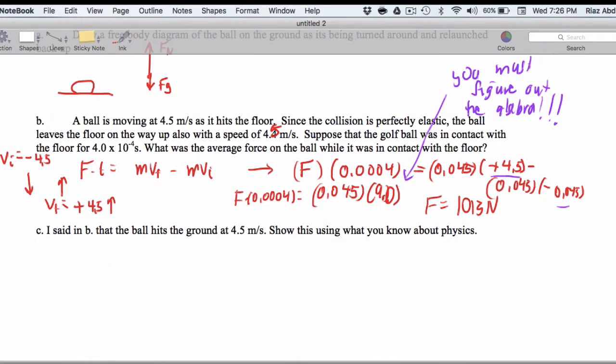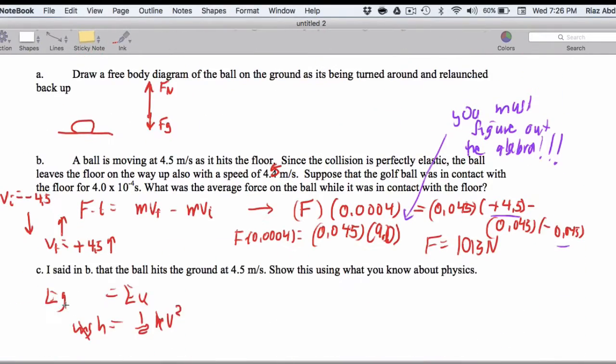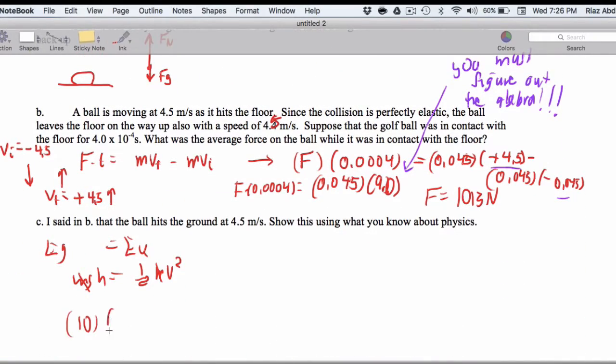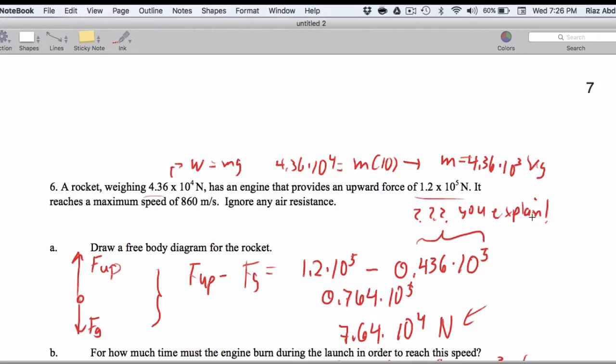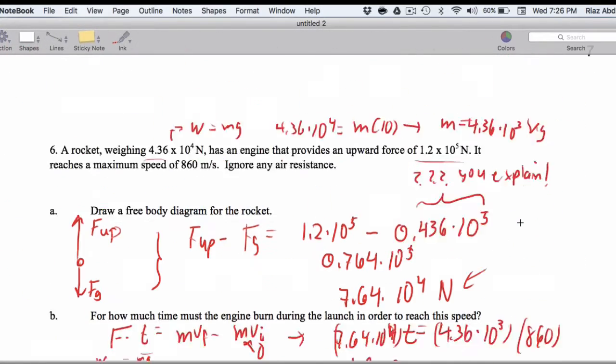Now here it says the ball hits the ground at 4.5 meters per second. I'm going to do a simple solution to this. Eg equals Ek. So MGH equals 1 half M V squared. This cancels. We drop from a height 1 meter. So we get 10 times 1 equals 1 half times V squared. V squared equals 20. V ends up being 4.47, which rounds to 4.5 meters per second. So that's it for the momentum impulse problems.